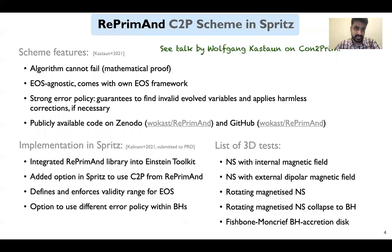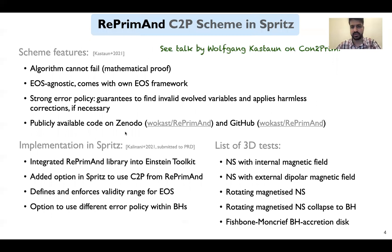Recently we introduced a new C2P scheme, which we refer to as the Reprimand C2P scheme, which is based on a root bracketing method and is proven to always converge to a unique solution. The scheme also comes with fine-grained error policies and is implemented in a completely EOS agnostic way. It is publicly available on Zenodo and on GitHub in the form of a C++ library called Reprimand, which also includes an EOS framework. On Friday, Wolfgang Kastan will talk in detail on this Reprimand library, so do tune in to his talk.